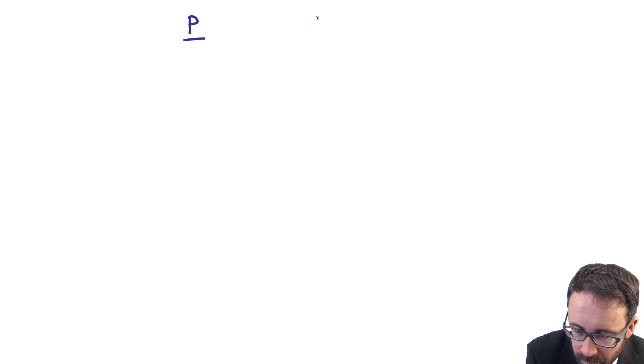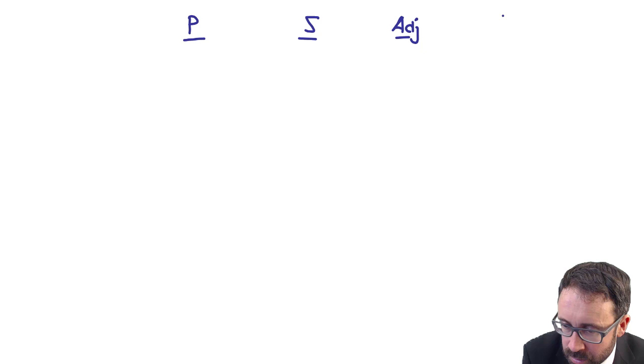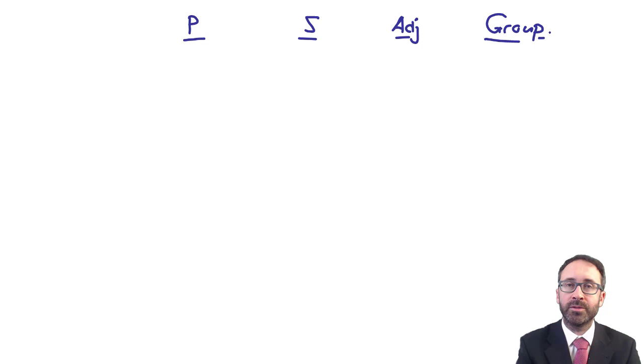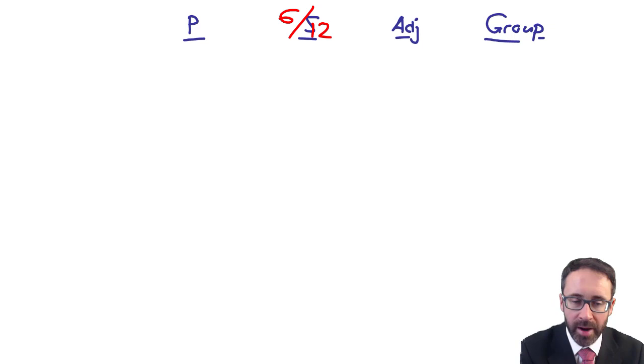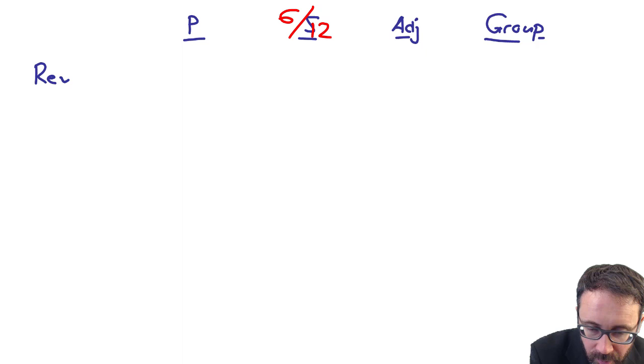So it's a lot of information to take in. Hopefully you've got it all there. So all we do, let's go through. Top of the page, you've got the P. Top of the page, you've got S, you've got your adjustments and then your group figures. A key bit just to make sure that you don't make any mistakes. Six-twelfths. That's what we need to prorate S's results by.